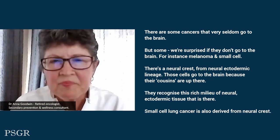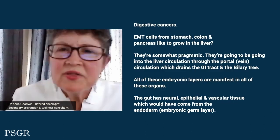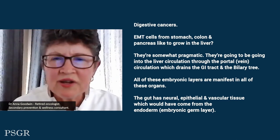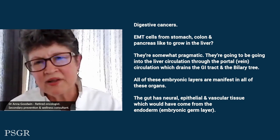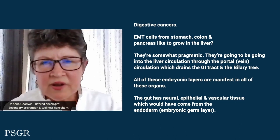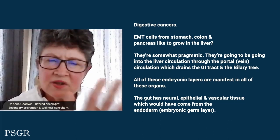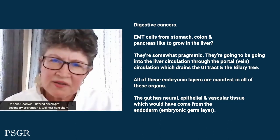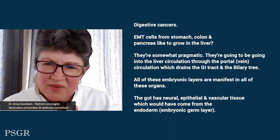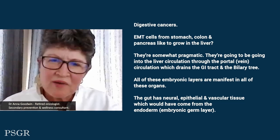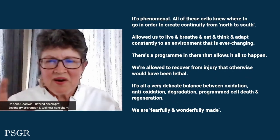Small cell lung cancer is also derived from neural crest. For the digestive system — we're seeing cancer all along it, including the liver — the GI EMT cells from the colon, stomach, and pancreas like to grow in the liver. That's a matter of circulation: they enter the liver through the portal circulation, which drains the GI tract and biliary tree. It's important to realize that all embryonic layers are manifest in all these organs, because the gut has neural tissue as well as epithelial and vascular tissue.